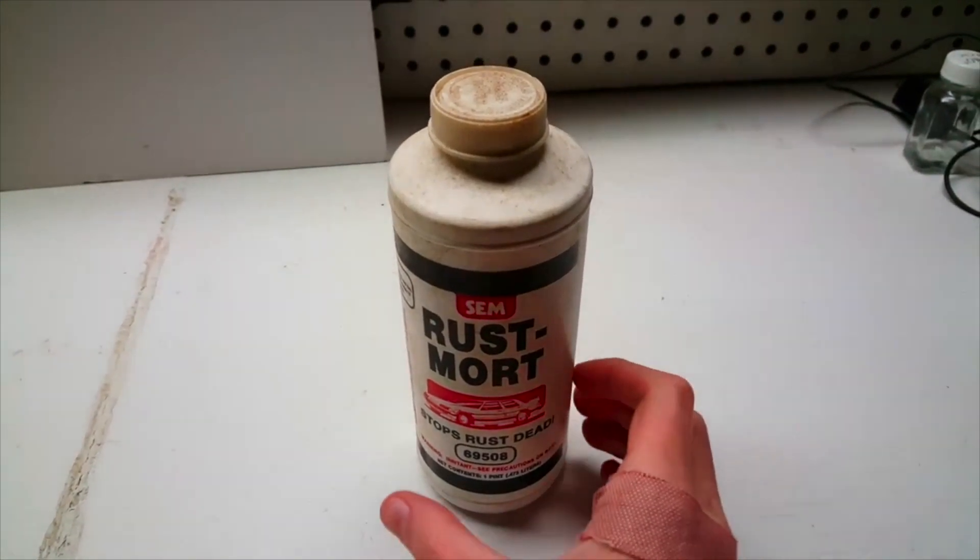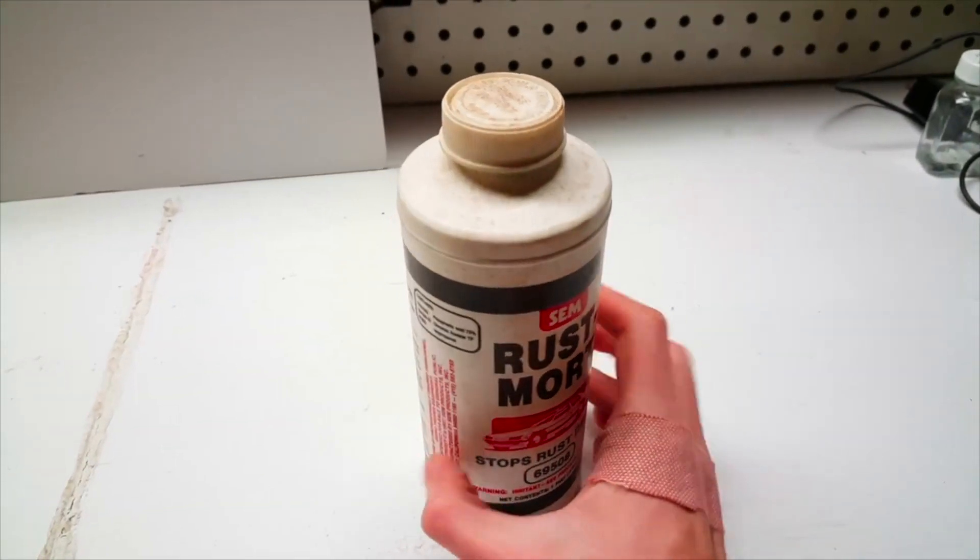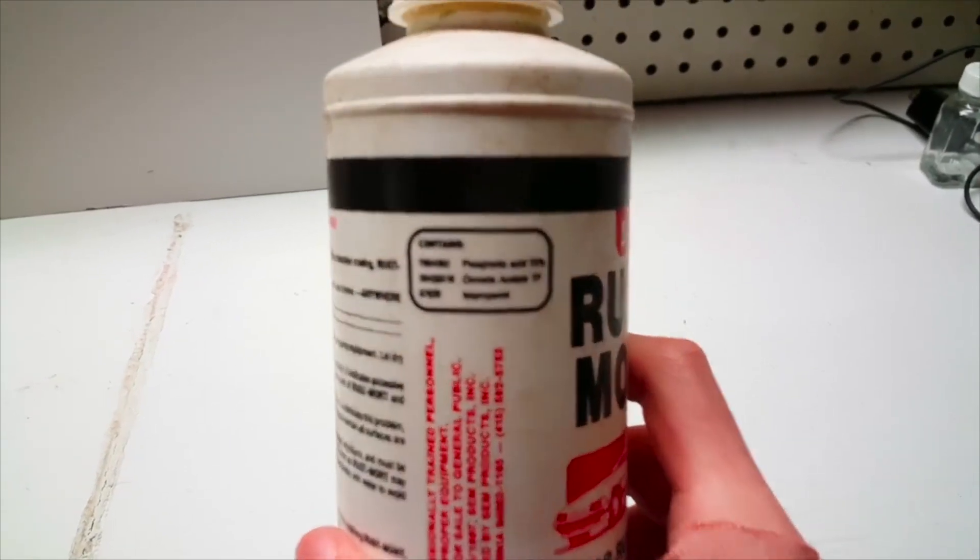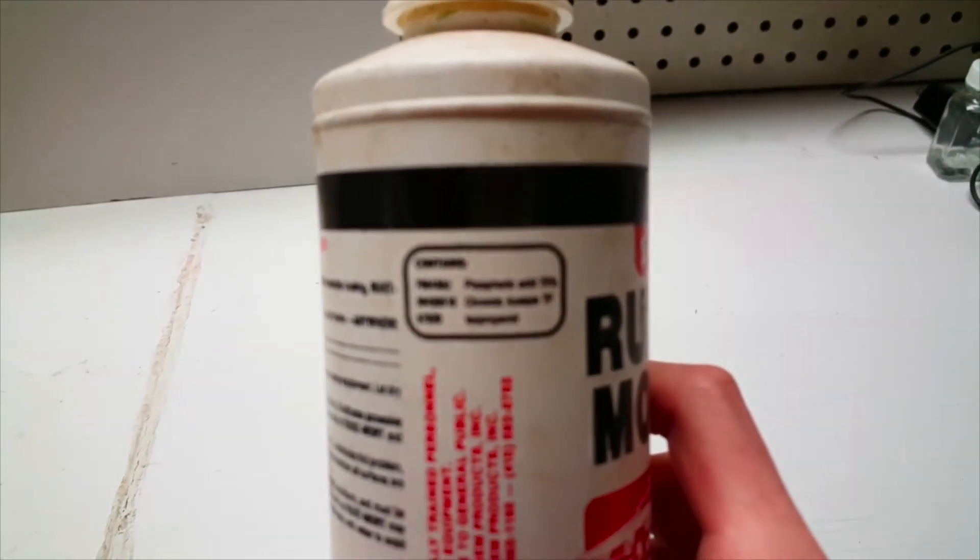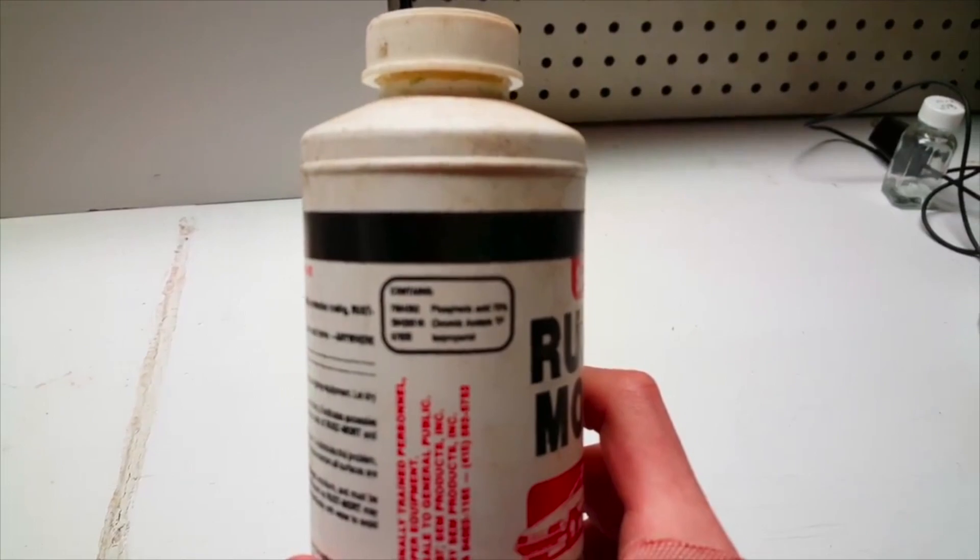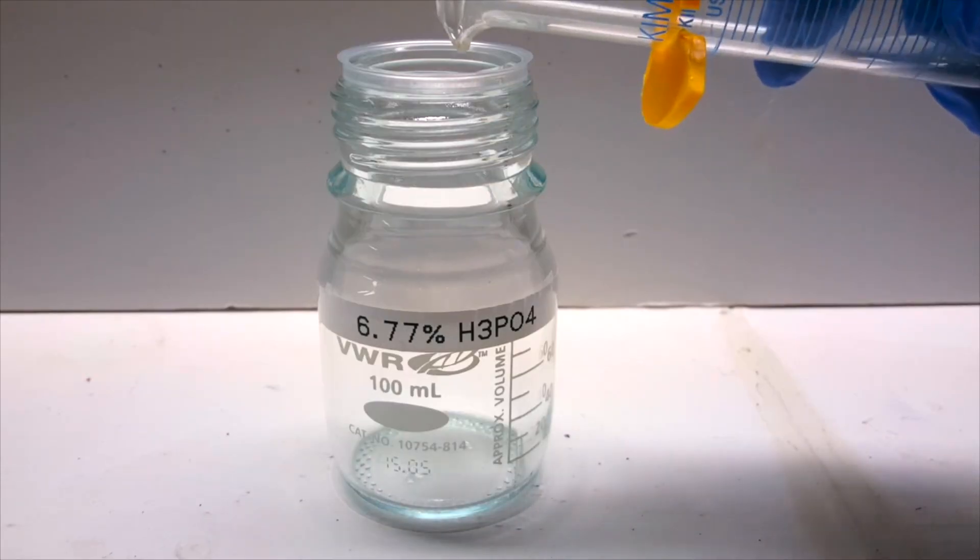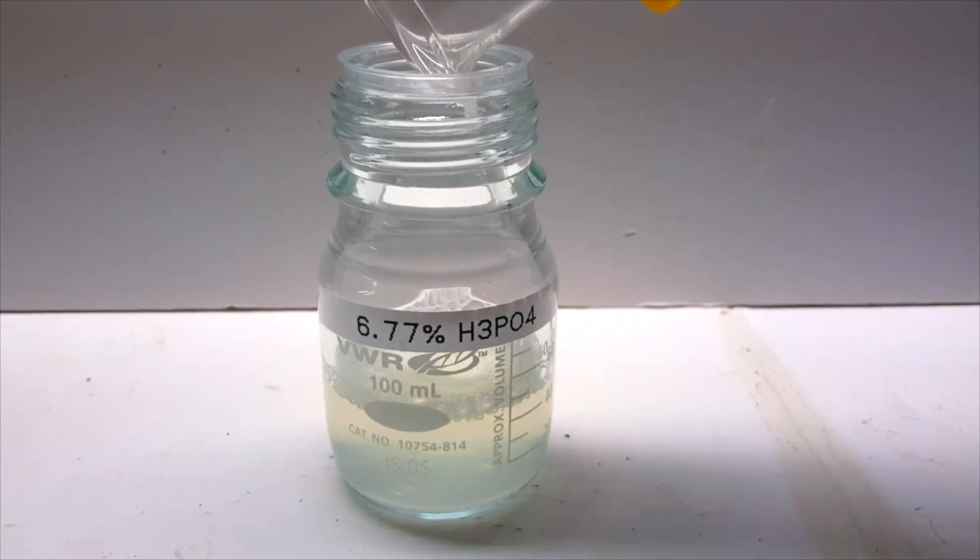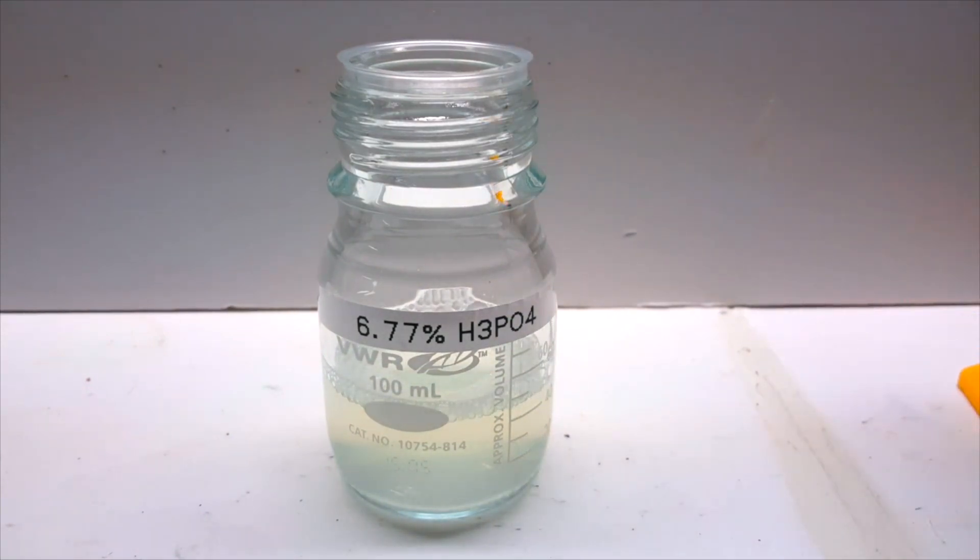In a previous video, I extracted phosphoric acid from an old rust remover. It was contaminated with what appeared to be some chromium-3 salts, so I attempted to distill to get a higher concentration of the acid. In the end, I only collected 47ml of a cloudy 6.77% acid, which is a pretty pitiful yield.